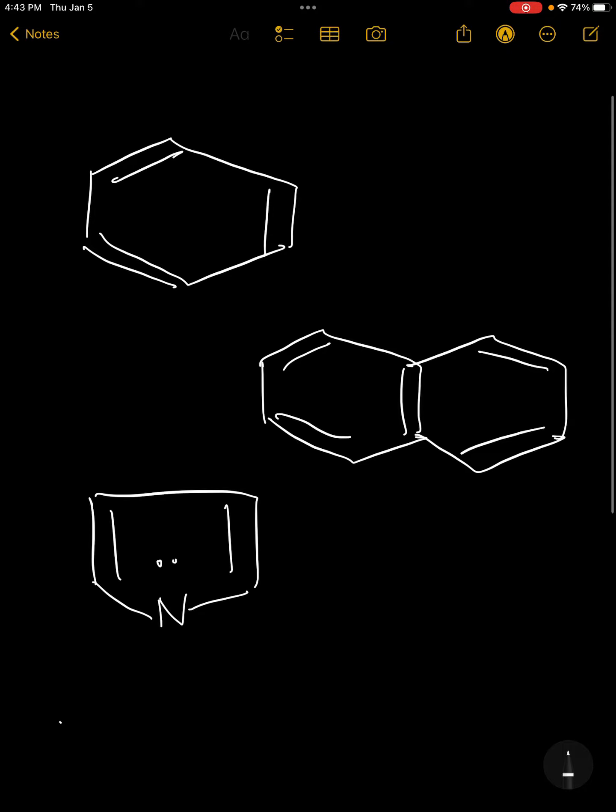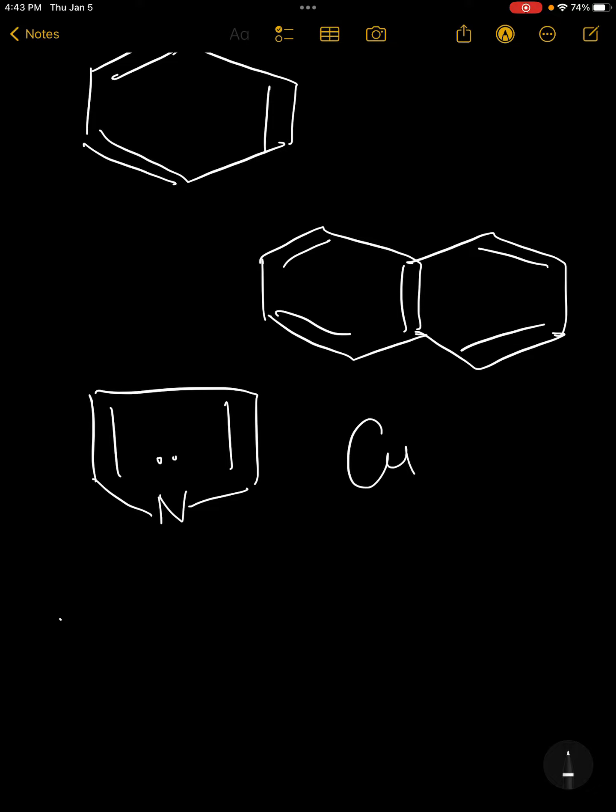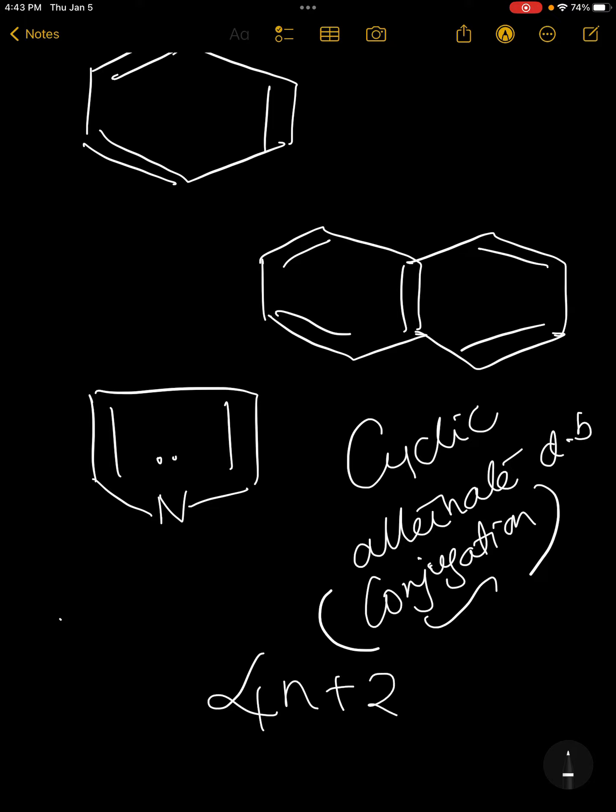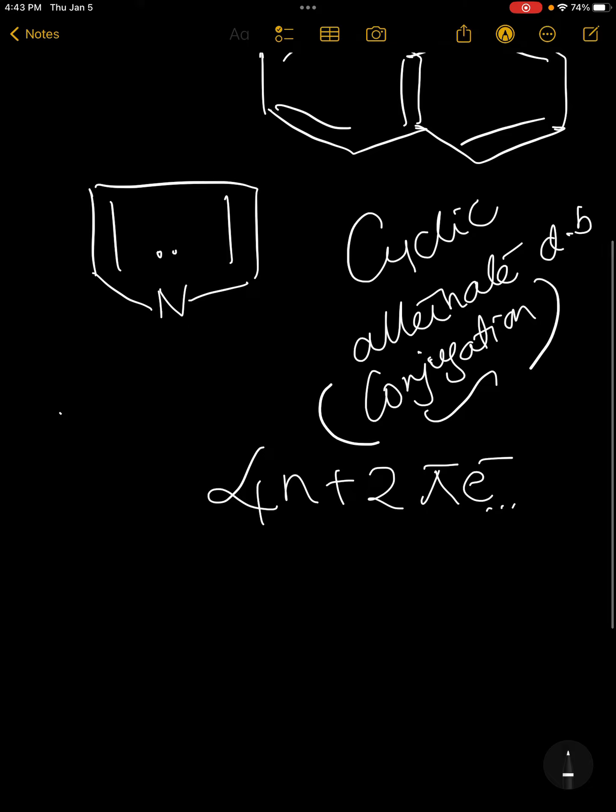So, first rule to be aromatic is cyclic. Then alternate double bonds, or simply you can say conjugation. Alternate double bonds is for understanding purposes. The term you have to use is conjugation, and 4n plus 2 number of pi electrons where n equals 0 or 1 or like that.